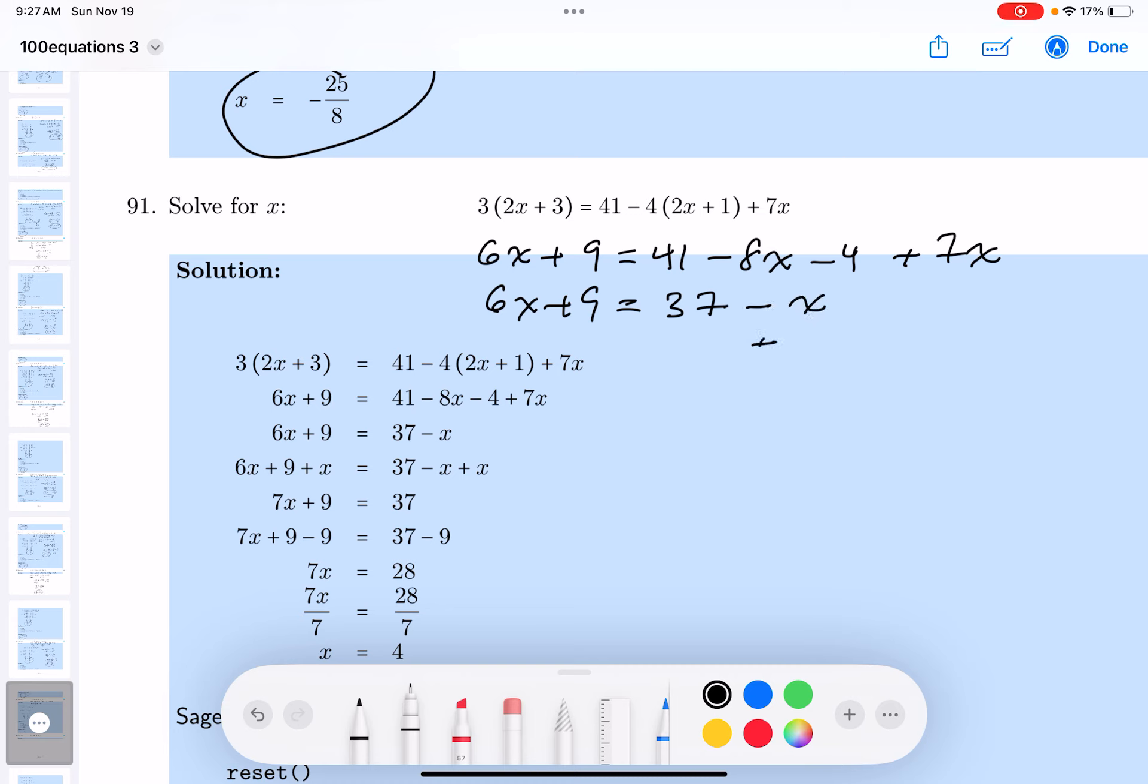What would I do now? I would add x to both sides. That's 7x plus 9 is equal to 37.